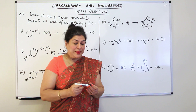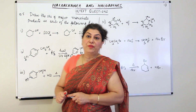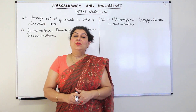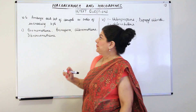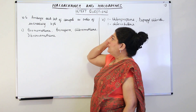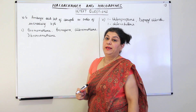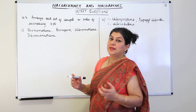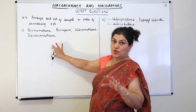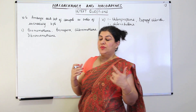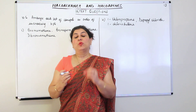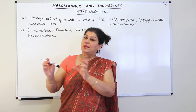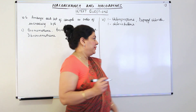Now question 10.6: arrange each set of compounds in order of increasing boiling points. Before solving, let us revise what determines boiling point. First, number of carbon atoms — as the number of carbon atoms increases, the boiling point increases.